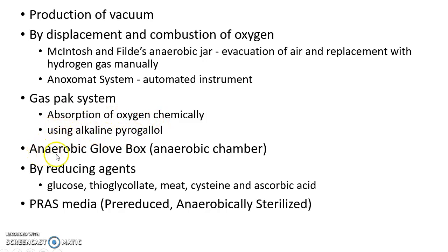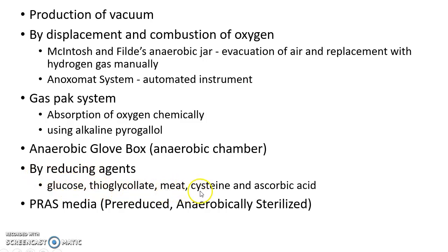The anaerobic glove box is an anaerobic chamber used for culture of anaerobic bacteria. Anaerobic environment can also be produced by reducing agents like glucose, thioglycolate, meat, cysteine, and ascorbic acid.